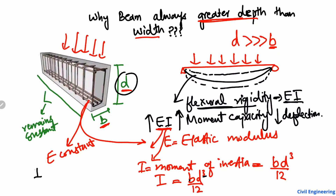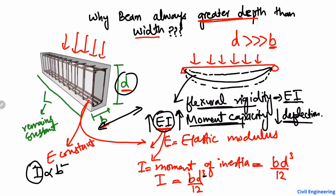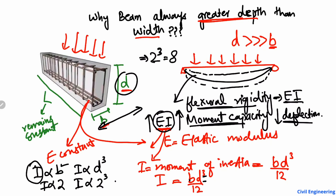The moment of inertia is directly proportional to both width B and depth D, but with different powers. If we increase the width by two times, the moment of inertia also increases by two times. However, if we increase the depth by two times, since D has a power of three, the moment of inertia increases by 2³ = 8 times — not just two times.